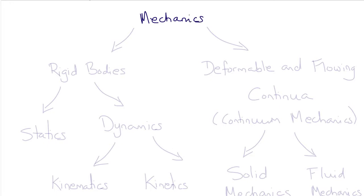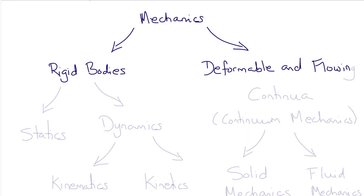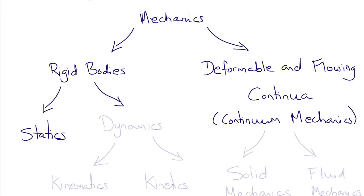Mechanics can be divided into the mechanics of rigid bodies, where we're not concerned with the ability of the material to change shape or flow, and mechanics of deformable and flowing continuous media. The mechanics of rigid bodies includes statics and dynamics. Within dynamics, we have kinematics, which refers to the motions of systems of particles and bodies, and kinetics, which refers to the forces involved in producing those motions.